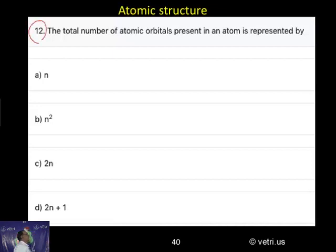Question number 12. The total number of atomic orbitals present in an atom is represented by: a) n, b) n squared, c) 2n, d) 2n plus 1.